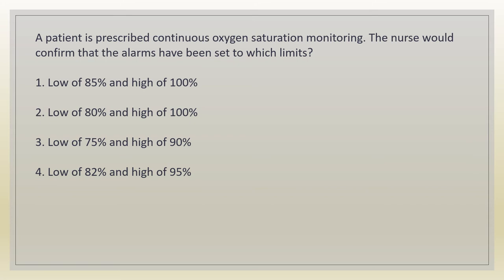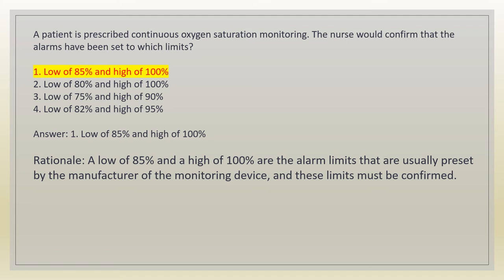A patient is prescribed continuous oxygen saturation monitoring. The nurse would confirm that the alarms have been set to which limits? 1. Low of 85% and high of 100%. 2. Low of 80% and high of 100%. 3. Low of 75% and high of 90%. 4. Low of 82% and high of 95%. Answer: 1. Low of 85% and high of 100%. Rationale: low of 85% and high of 100% are the alarm limits usually preset by the manufacturer of the monitoring device, and these limits must be confirmed.